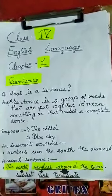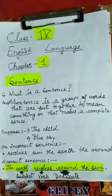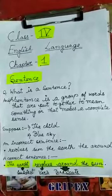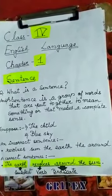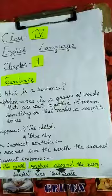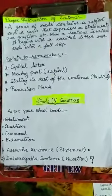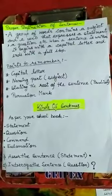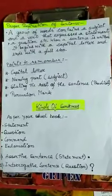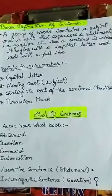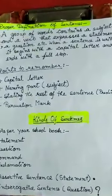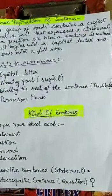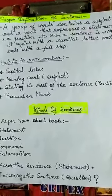Now here, 'the earth' is the subject, and the rest — 'revolves around the sun' — is the predicate. So 'revolves' here is the verb. The proper definition of a sentence is: a sentence is a group of words that contains a subject and a verb, and that expresses a statement, a question, etc. When a sentence is written, it begins with a capital letter and ends with a full stop.